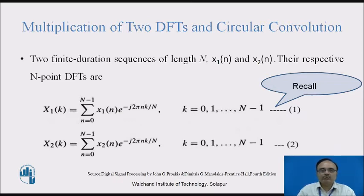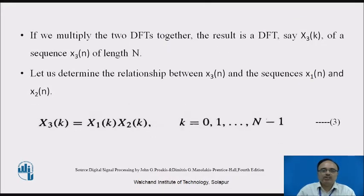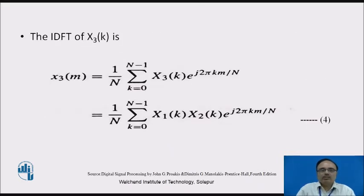For x1(n) and x2(n) we represent the two corresponding DFTs as X1(k) and X2(k). The multiplication of these two DFTs is represented as a third DFT, X3(k). The relation between X3 and x1(n), x2(n) is represented using the inverse discrete Fourier transform definition — this is the property of circular convolution, which is equivalent to multiplication of two DFTs. Recalling the IDFT equation: x3(m) = (1/N) summation k=0 to N−1 of X3(k), where X3(k) = X1(k)·X2(k), multiplied by e raised to j2πkm/N.